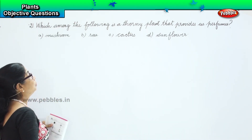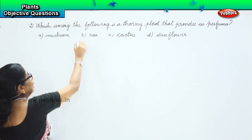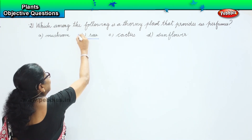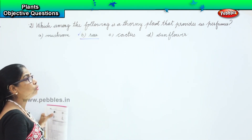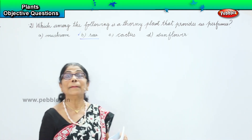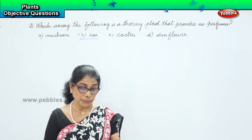No. The answer is option B — Rose. Rose is a thorny plant and it also provides us with perfume.